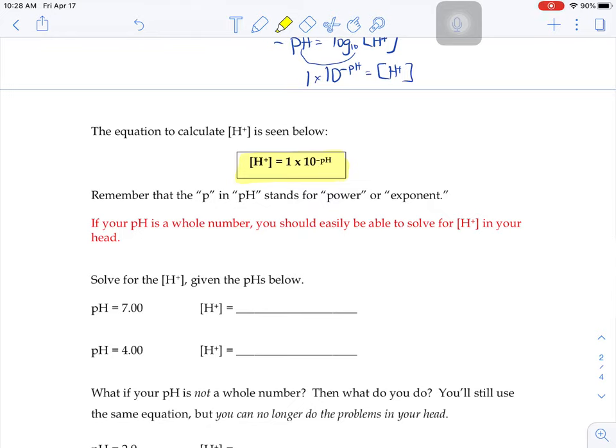If your pH is a whole number, it's really easy because all you have to do is plug in that whole number. So if your pH is 7, your H+ concentration is going to be 1 times 10 to the negative 7. If your pH is 4, 1 times 10 to the negative 4. The pH is the power. It is the exponent, and we just want to do the negative pH. So we just flip the sign.